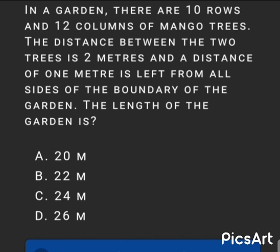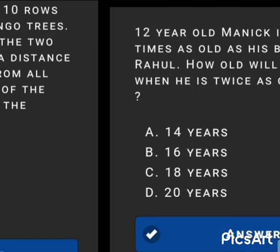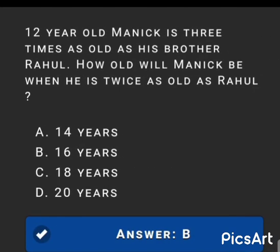Next MCQ: In a garden there are 10 rows and 12 columns of mango trees. The distance between two trees is 2 meters and a distance of 1 meter is left from all sides of the boundary. The length of the garden is option C: 24 meters.